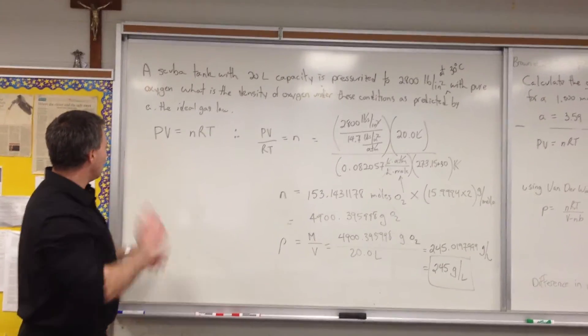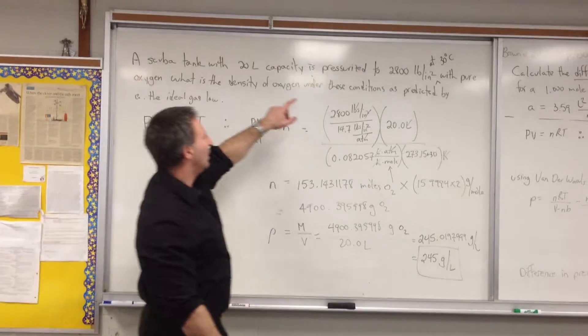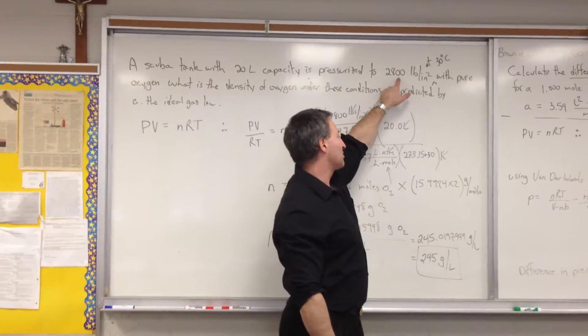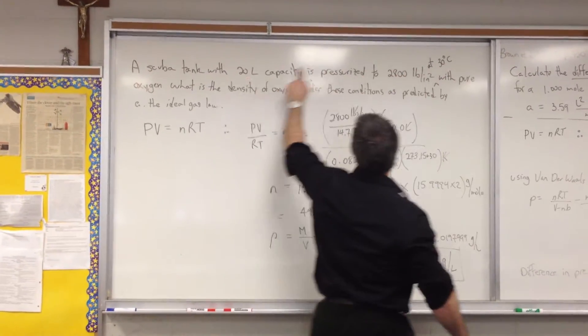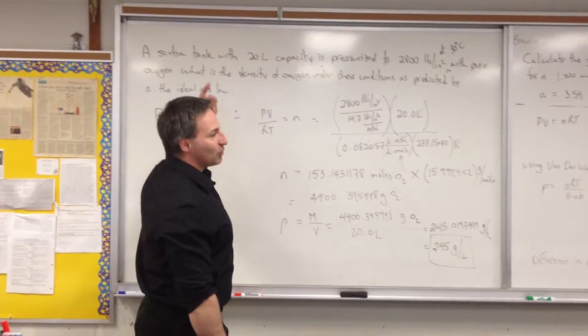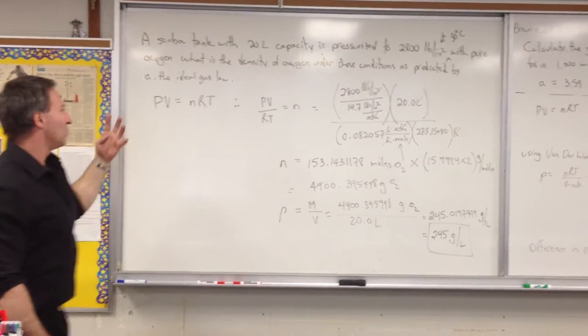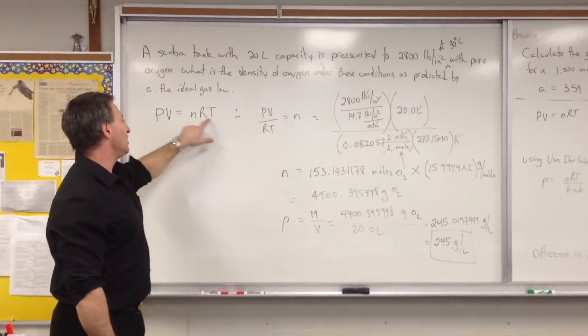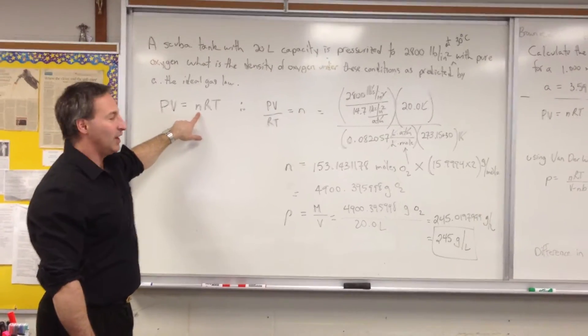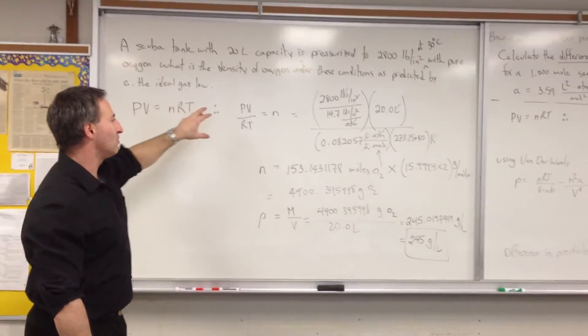What we're told here is the pressure, which is 2,800 pounds per square inch, the temperature, the volume, and the value of R we know is 0.08205. So we have P, V, R, and T, which means we need to solve for N. So we rearrange the equation to solve for N.